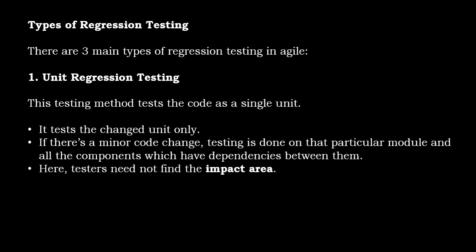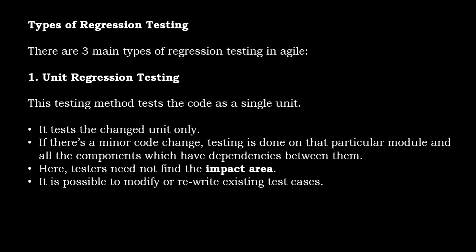Here, testers need not find the impacted area. It is possible to modify or rewrite existing test cases. For example, suppose you have a drop-down which displays the country name. Now instead of the country name it is displaying the country code, which is a defect. So you will go back to the developer and ask him to fix that. Once it is fixed, you will perform unit regression testing on that particular drop-down to make sure it is displaying the country names.